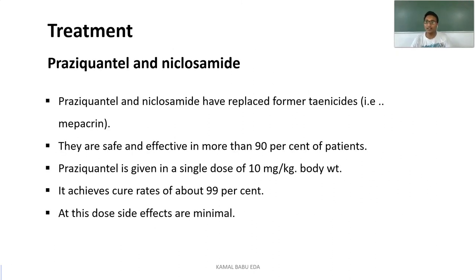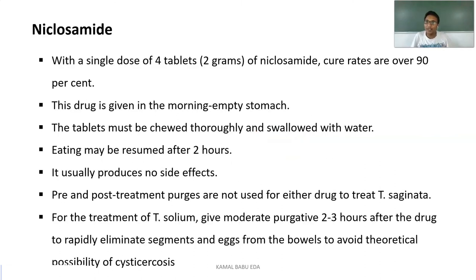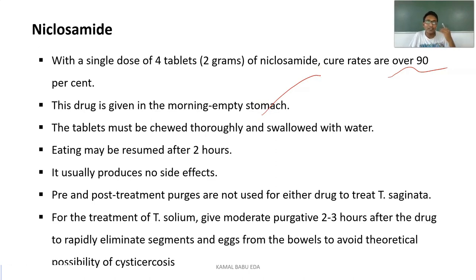For treatment of teniasis, the drugs praziquantel and niclosamide are effective in more than 90% of patients. Praziquantel is given as a single dose of 10 mg per kg body weight with a cure rate of about 99% and minimal side effects. Niclosamide — 4 tablets totaling 2 grams — is given in the early morning on an empty stomach, chewed and swallowed with water, and the patient must wait at least 2 hours before eating.